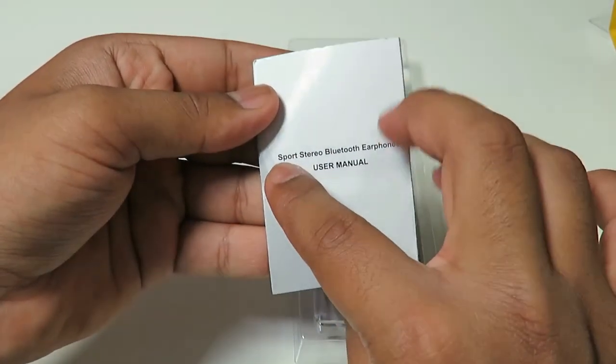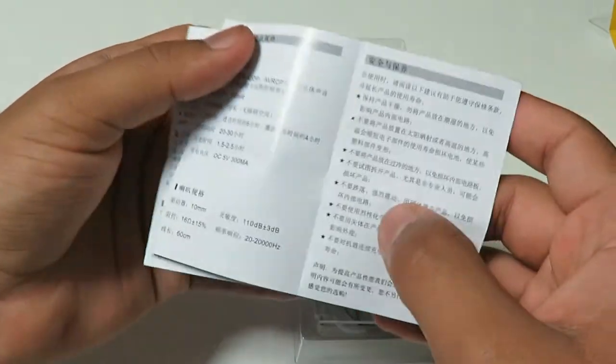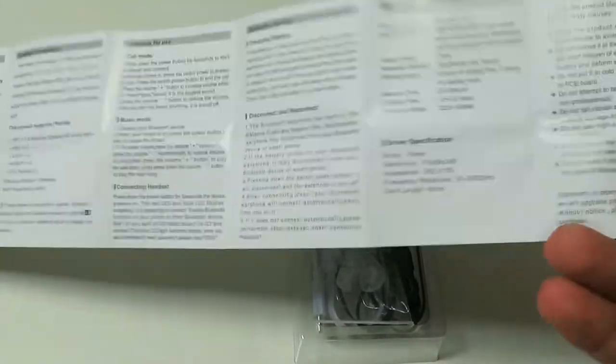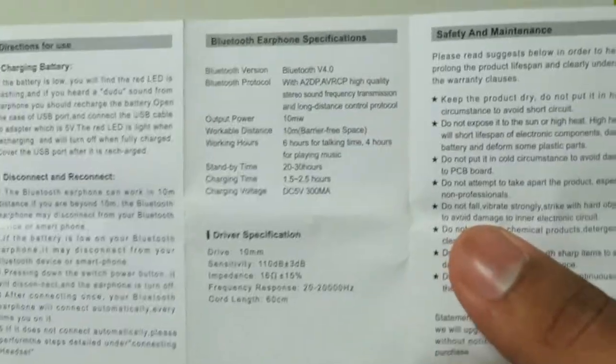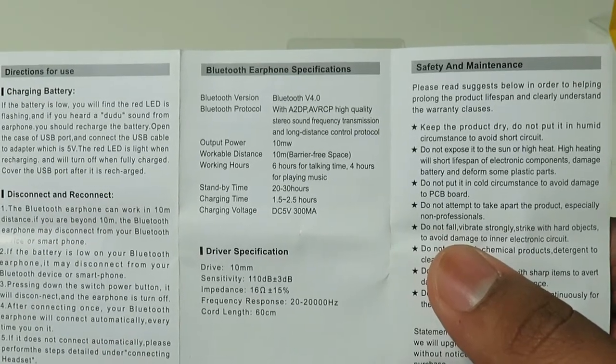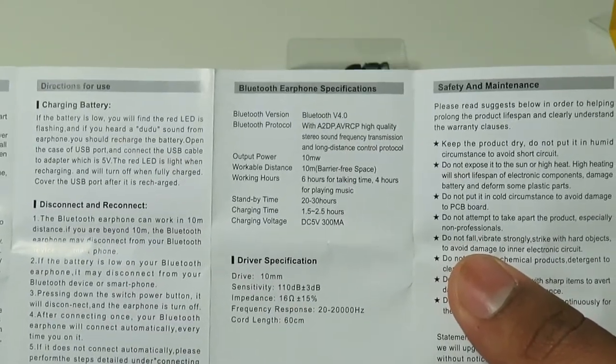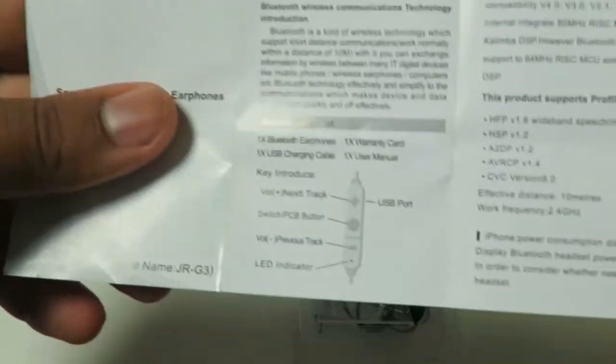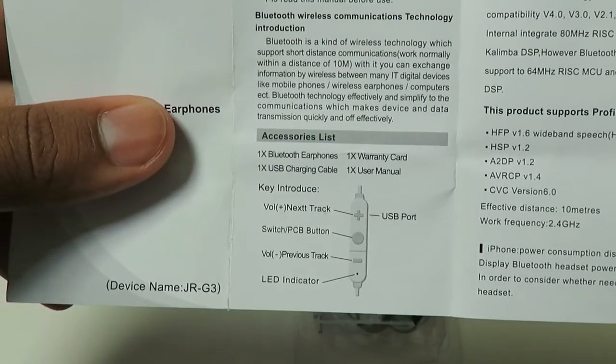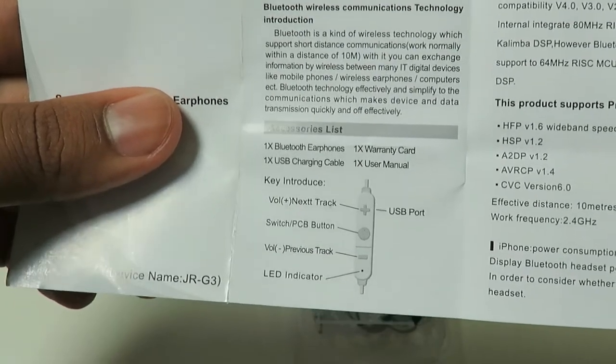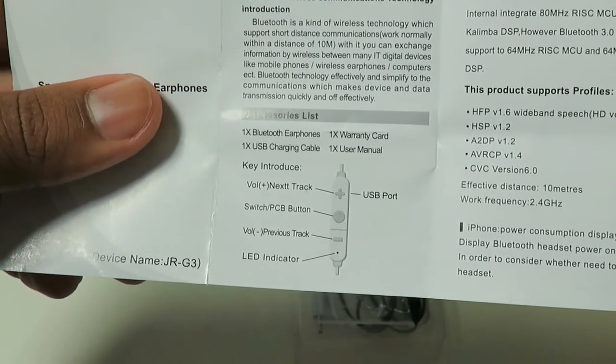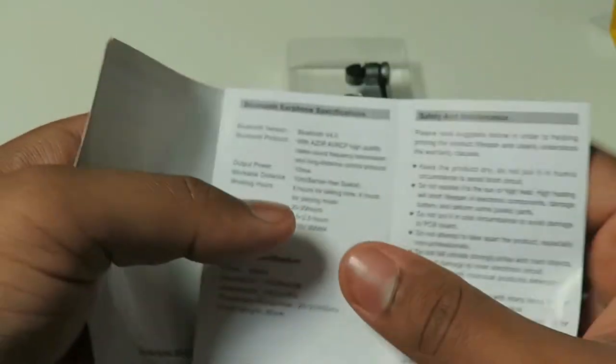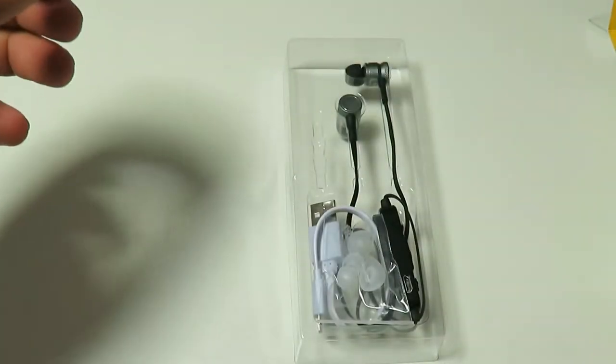We've got the user manual here. These are the sport stereo Bluetooth earphones. These specs will be accurate instead of the actual packaging. Let's go ahead and find the specs here, there it is, boom, right there. If you want to go ahead and read that, pause the video. And then the remote control button over here, volume up for next track, volume down previous track, LED indicator and USB port as well.